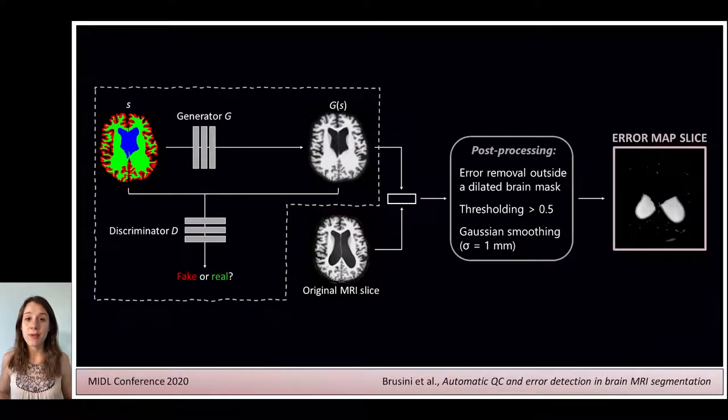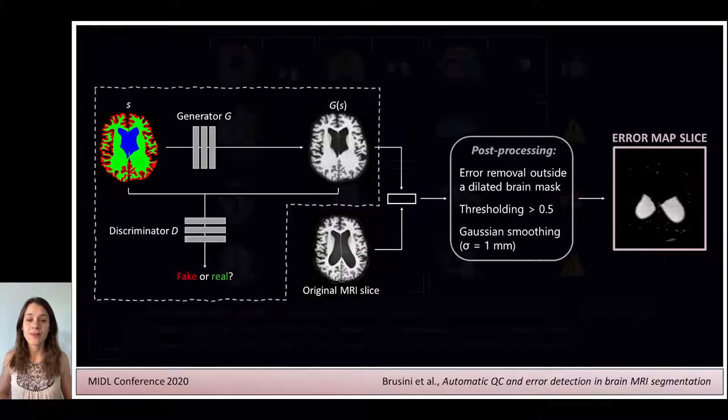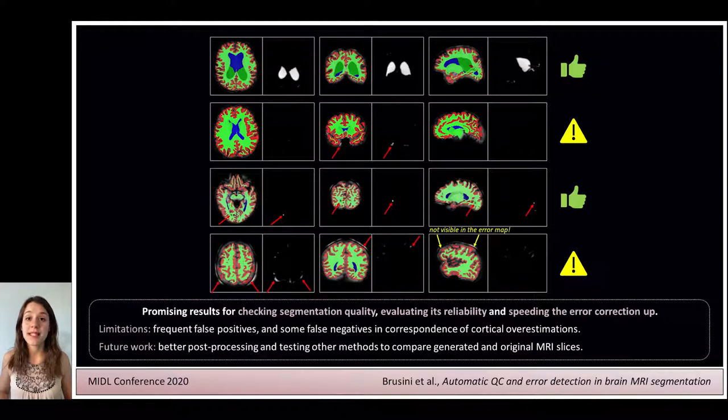The creation of the segmentation error maps is based on the use of generative adversarial networks and in particular the pix-to-pix architecture. The proposed pipeline showed promising results.